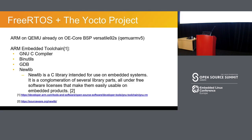FreeRTOS and the Yocto Project — the point I'm going to prove today is that you can do this. I used the qemuarmv5 machine. When I started this it was qemuarm, but it was moved to qemuarmv5, which is a Versatile PB 2.6 BSP, and that's already in oe-core, which is the reason I'm using it.